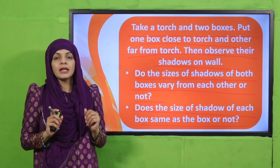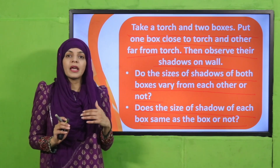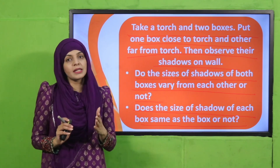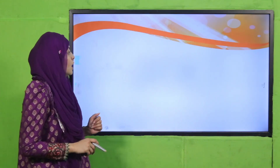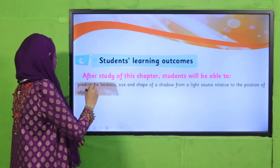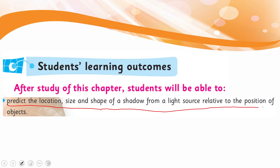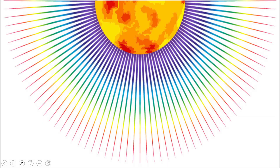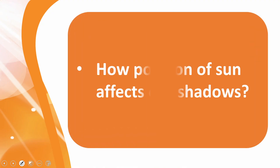I hope everybody has done the activity. In today's lecture, students will be able to predict the location, size, and shape of a shadow from a light source, related to the position of the object. Today we will predict the size and shape of the shadow from the light source.